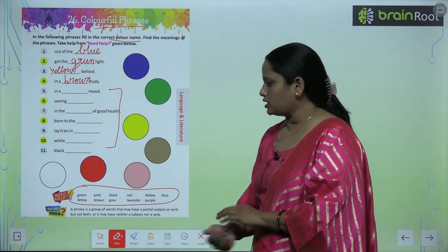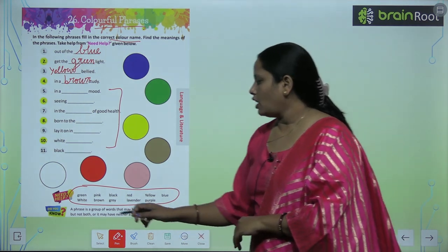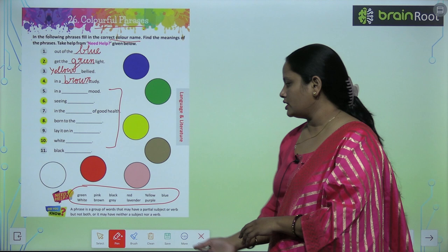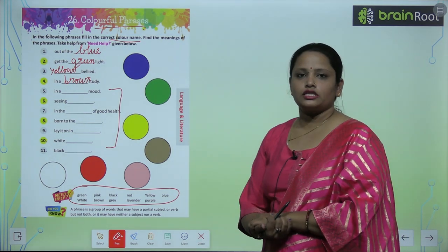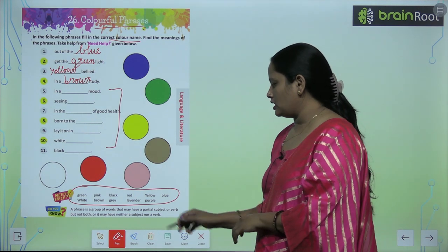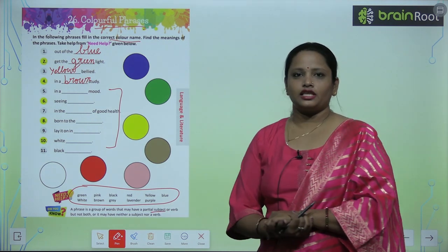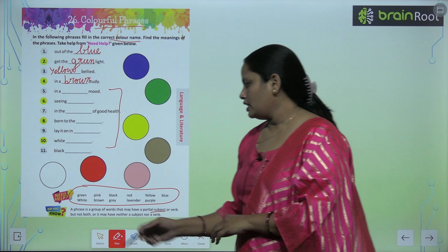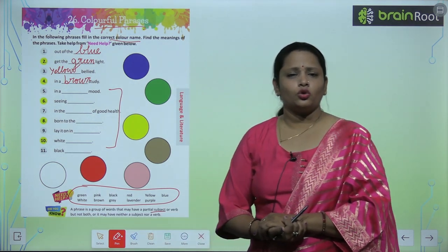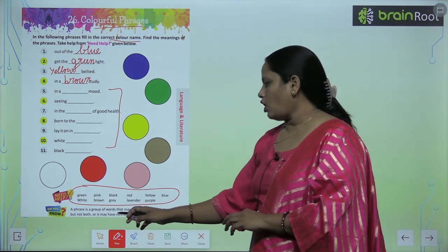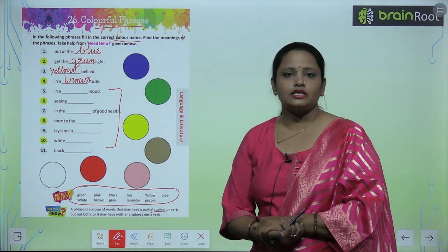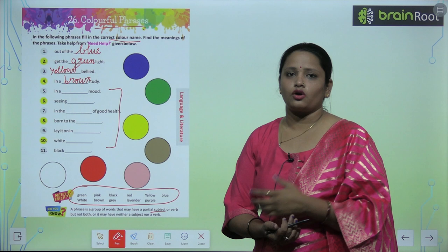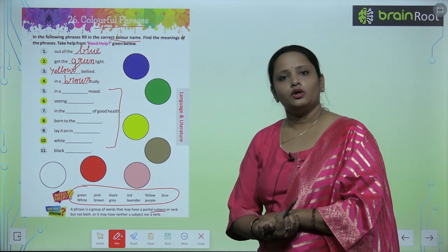Let's see what's written here. Did you know a phrase is a group of words that may have a particular subject or verb? Phrase kya hoota hai, group of words hoota hai jis mein ya toh koi subject ho sakta hai ya koi verb ho sakta hai, but not both. Dono nahi ho sakta hai. Or it may have neither a subject nor a verb. Aisa bhi ho sakta hai ki jo phrase hai us mein na koi subject ho or nahi koi verb ho.